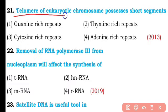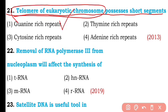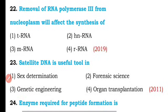Question number twenty-one. The telomere of eukaryotic chromosomes possesses short segments that are rich in: guanine-rich repeats, thymine-rich repeats, cytosine-rich repeats, or adenine-rich repeats? So the correct answer is option one — the telomere of eukaryotic chromosomes is rich in guanine-rich repeats.